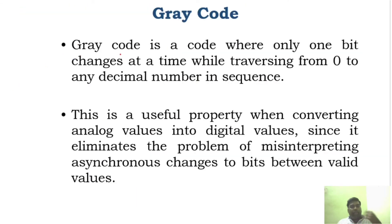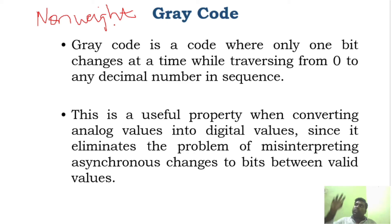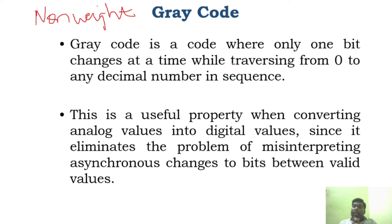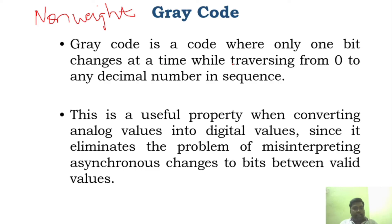Grey code is a non-weighted code which does not follow the weighting principle — each and every bit will not correspond to the position of the weight. Grey code is the code where only one bit changes at a time while traversing from 0 to 9. This is a very useful property which is used in analog to digital converters.